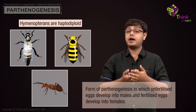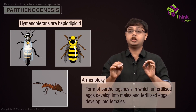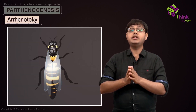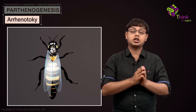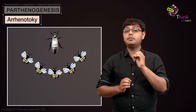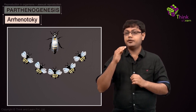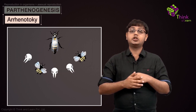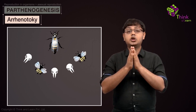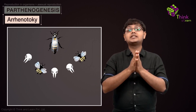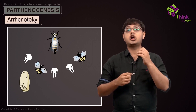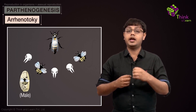This standard parthenogenesis is called arrhenotoky. Arrhenotoky permits honeybees to maintain their social structure, where only a few male drones need to be present at any time. If the male drones were to die after mating — which happens very often — the queen bee has the ability to create more drones by choosing not to fertilize a few of her eggs.